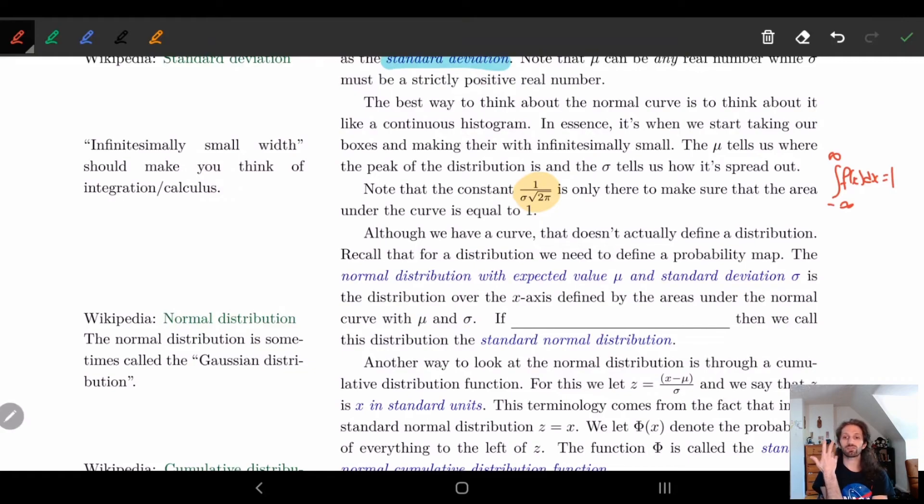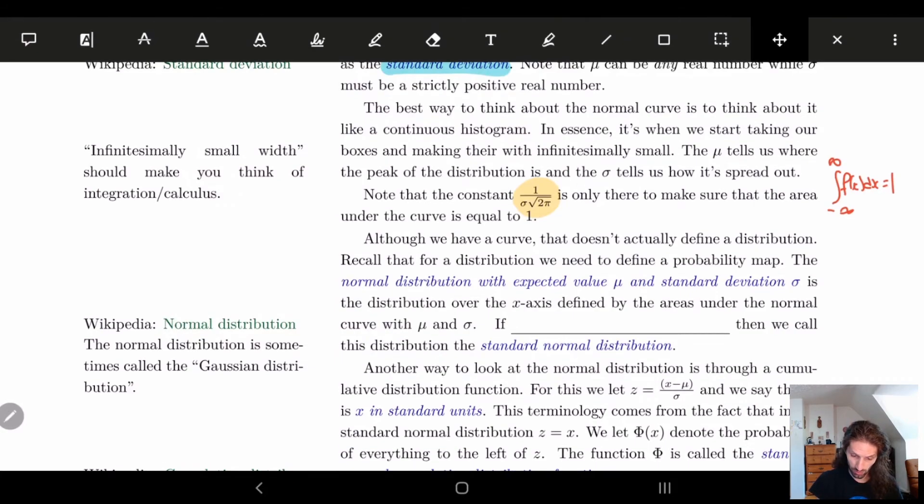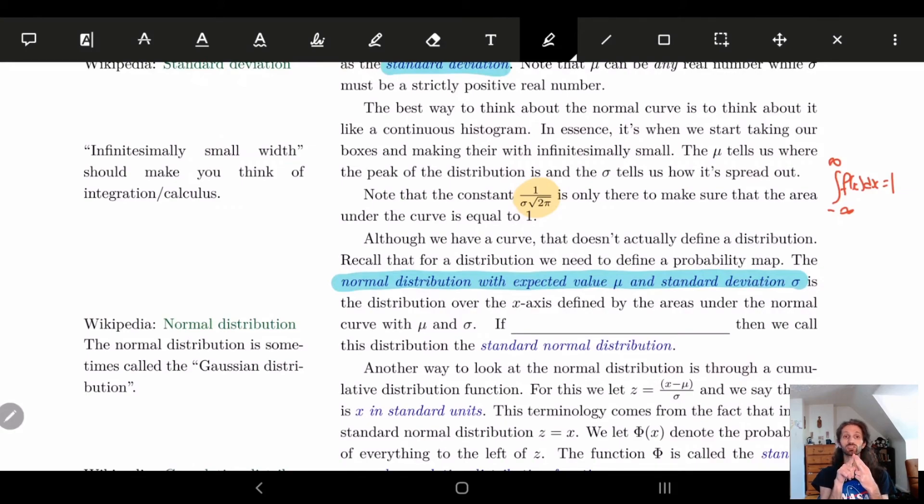So what we need to do is we actually need to define what this distribution is. The normal distribution with expected value mu and standard deviation sigma, we need both of these parameters, is just going to be the distribution over the x axis, defined by areas under the curve, in other words, integration. So we're just looking at areas under the curve, and that is going to give us our distribution.